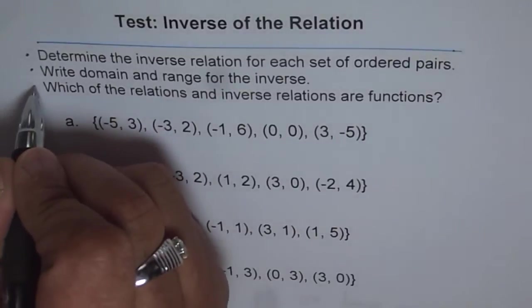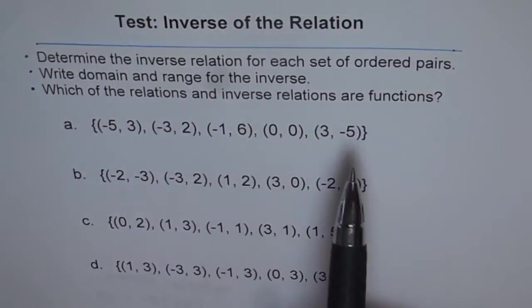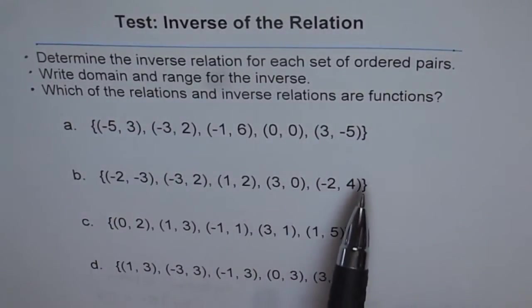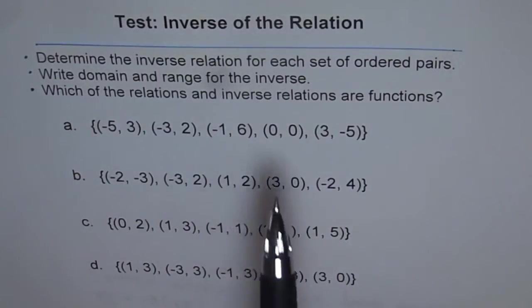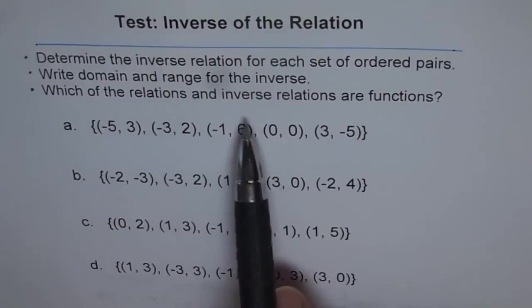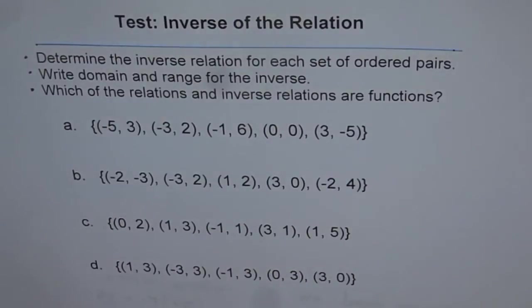So first, second and third. The first one is you need to find inverse of these relations. Second, write down domain and range for the inverse only. And third, which of the relations and inverses are functions. So that is what you need to do.